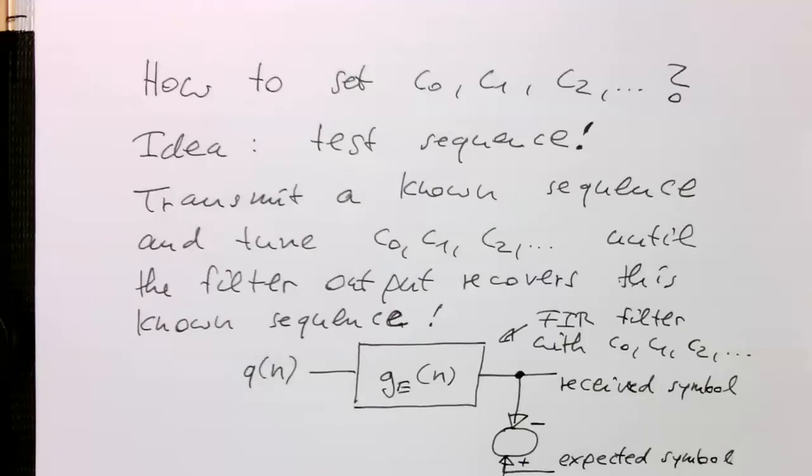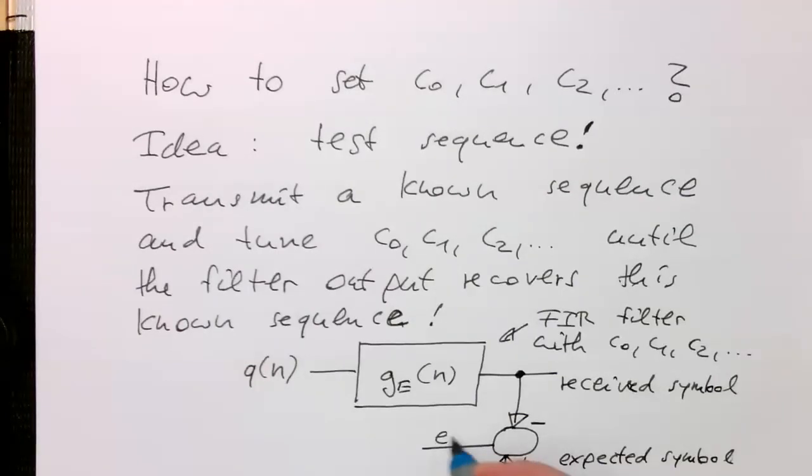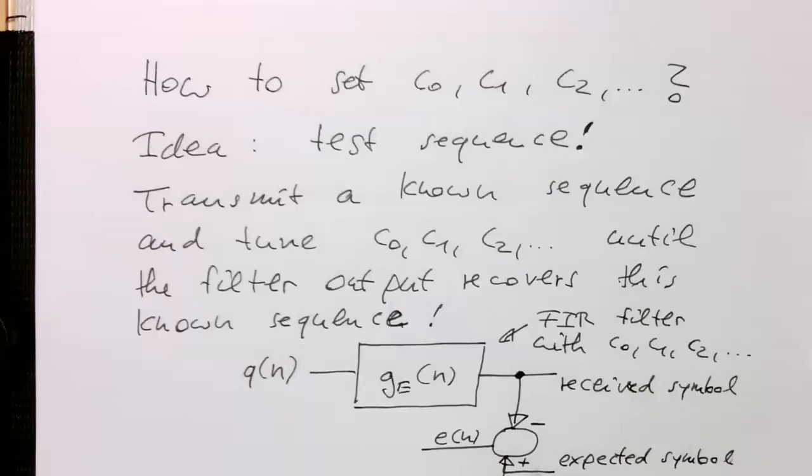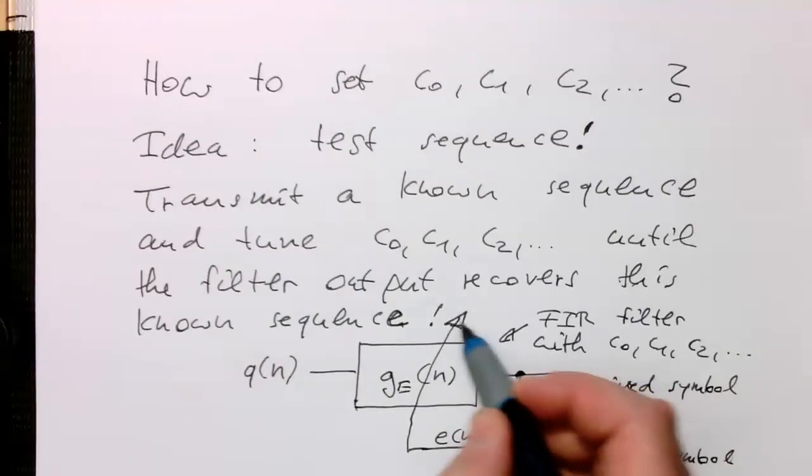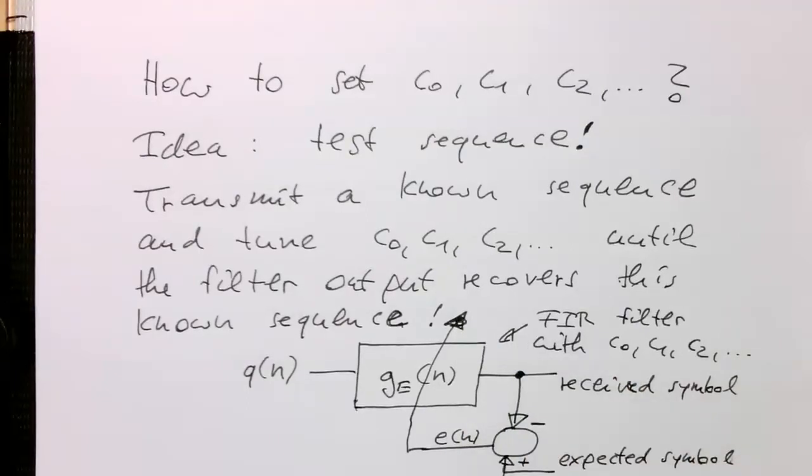And if they are not identical, we are creating a signal called E of N, which is essentially an error signal. And so if the received symbol and the expected symbol are identical, then this one is zero. But if the received and the expected symbol is not zero, then we change these coefficients here. And that's usually drawn like this one here. And so this one is here an error signal.